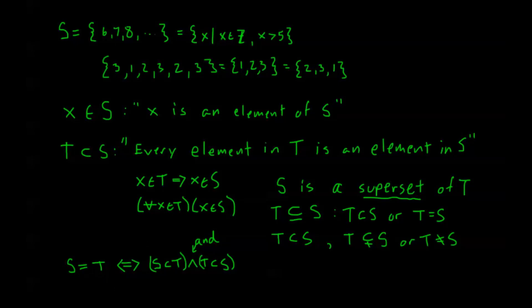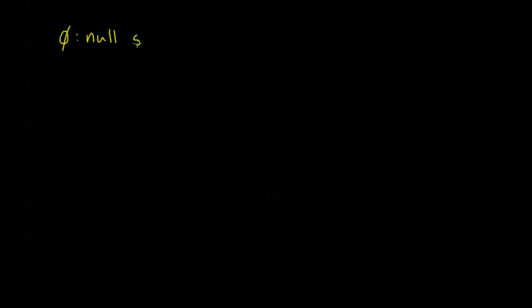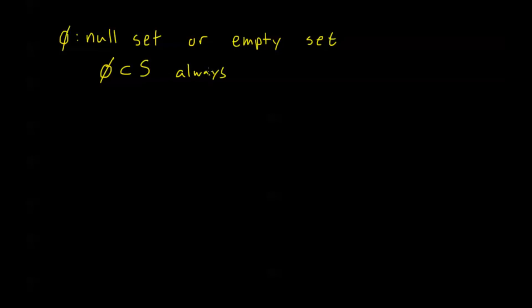Now I'm going to go over some new special sets. The first one is called the null set, or sometimes the empty set. This literally means an empty set — it's the set which contains no elements. If you think of a set as a box filled with toys, the null set would be a toy box that has nothing in it. Notice that the empty set is a subset of S for any set S — that's always going to be a true statement. The null set is a subset of anything.